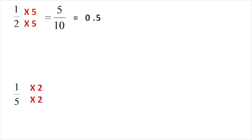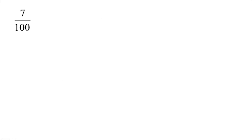2 multiplied to get denominator 10: numerator becomes 1 digit and the decimal is 0.5. So 1/2 = 1/5 equivalent means denominator 10. For 7/100, the denominator is 100, so there are 2 decimal digits.